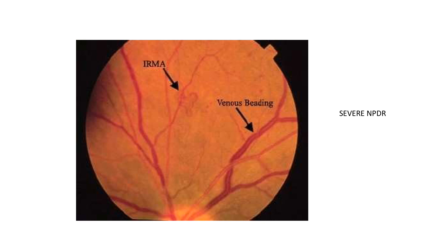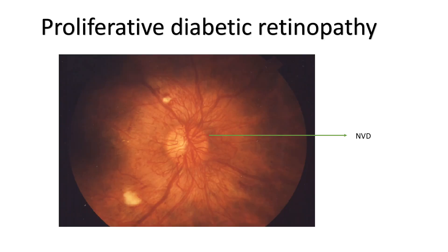The next stage is severe NPDR. Here you have something called venous beading and IRMAs formed in the retina. By this time, blood flow is severely compromised. The stage of proliferative diabetic retinopathy, or PDR, is extremely dangerous because there are new vessels growing all over the optic nerve.